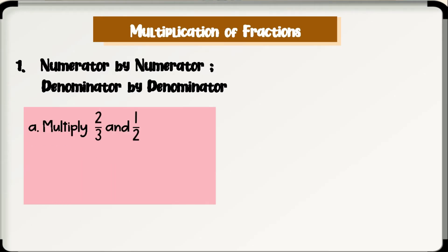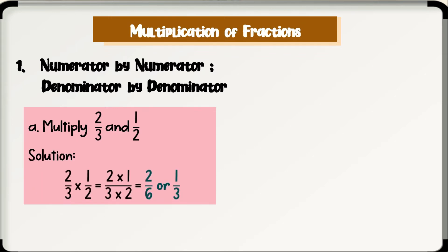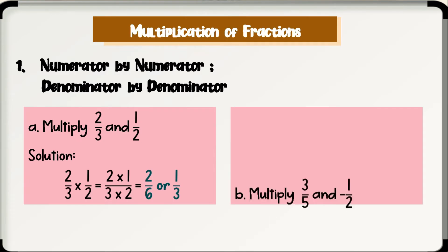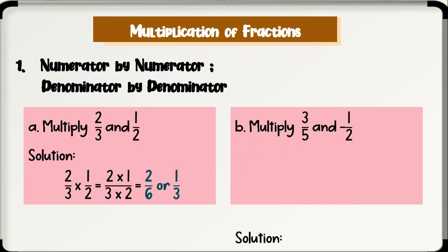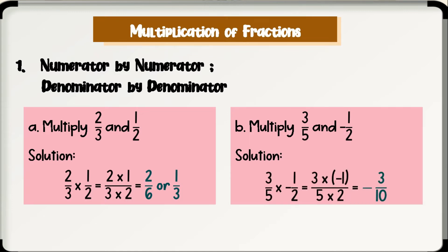Let's have some examples. Letter A: multiply 2 thirds and 1 half. Solution: 2 thirds times 1 half is equal to 2 times 1 for the numerator, over 3 times 2 for the denominator. Multiplying, we have 2 over 6, or 1 third. Therefore, 2 thirds times 1 half is equal to 1 third. Letter B: multiply 3 fifths and negative 1 half. Solution: 3 fifths times negative 1 half is equal to 3 times negative 1, over 5 times 2. Simplifying, we have negative 3 over 10. Therefore, 3 fifths times negative 1 half is equal to negative 3 over 10.